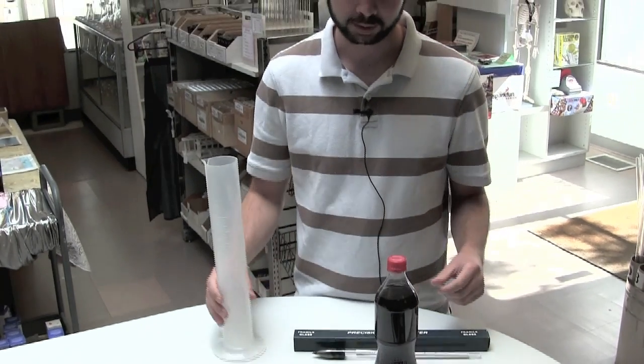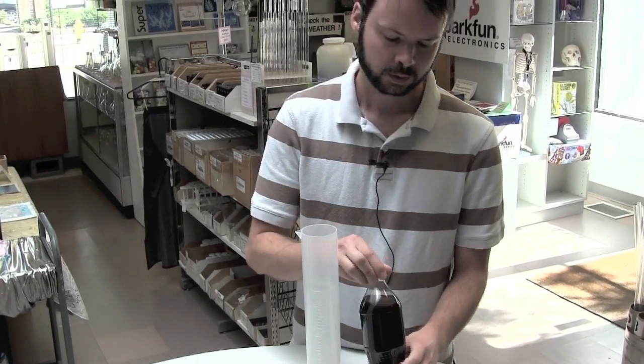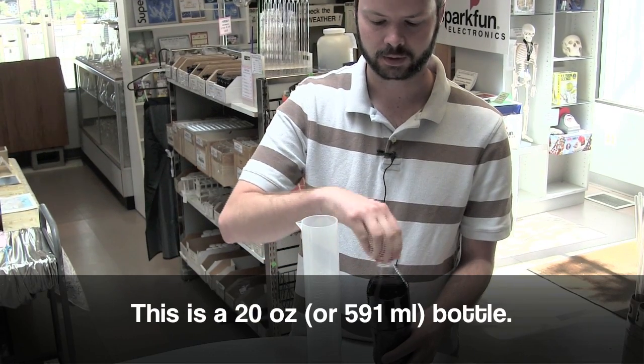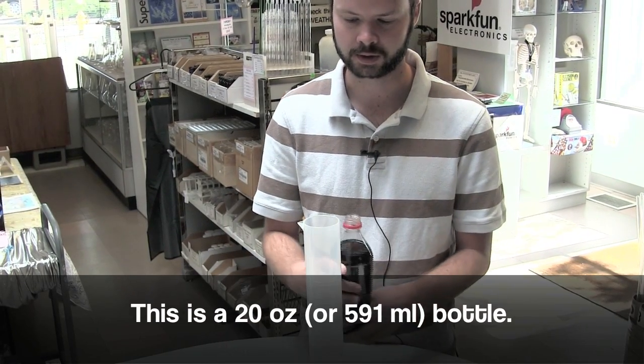So after you've got all your supplies together, take note of the volume of your beverage in milliliters and pour it into the graduated cylinder carefully.